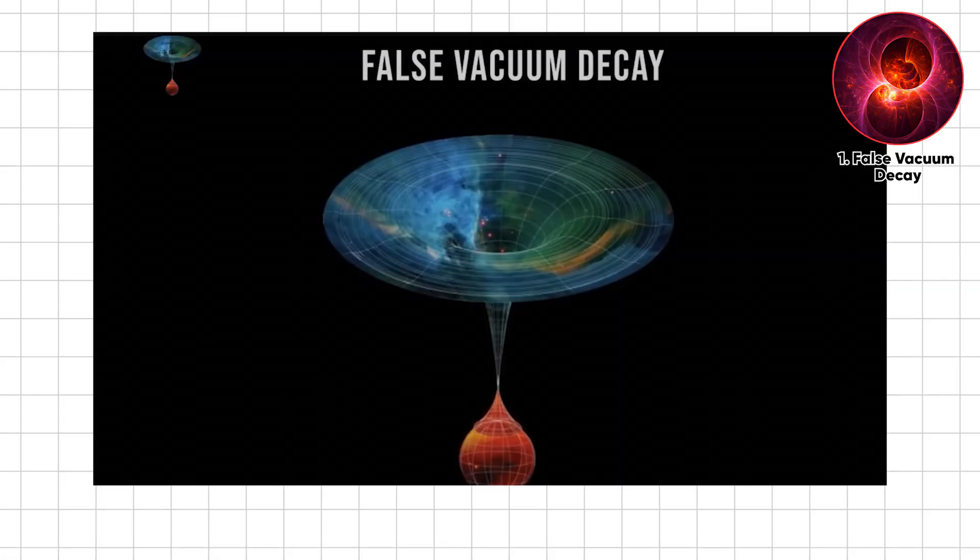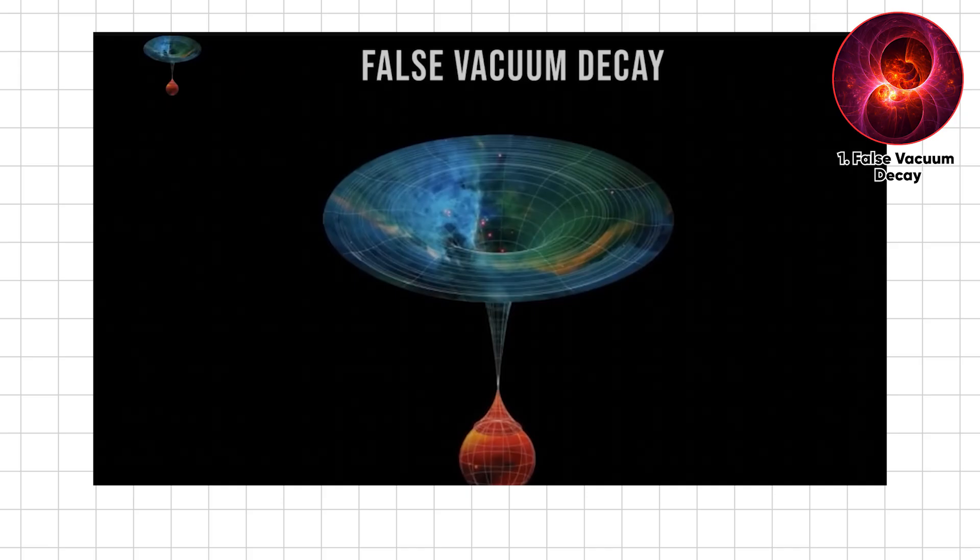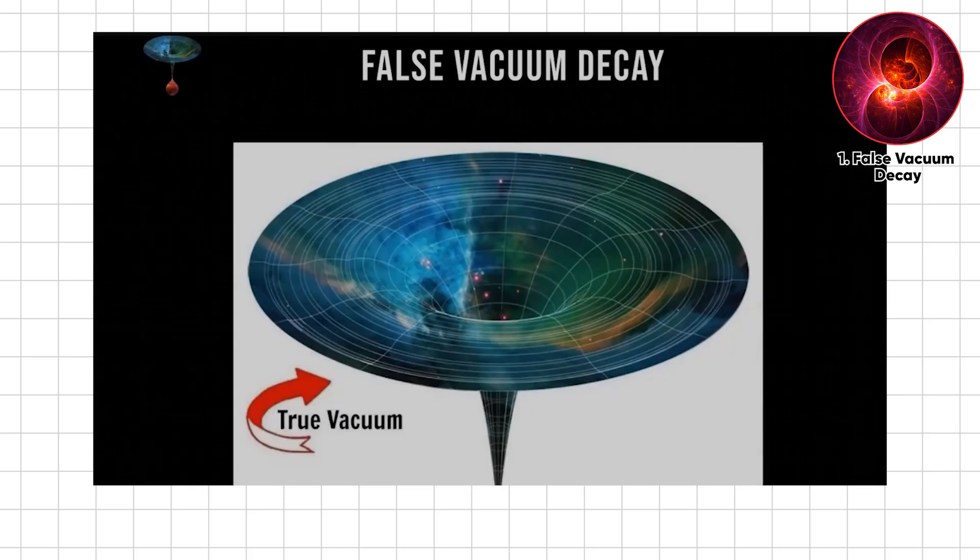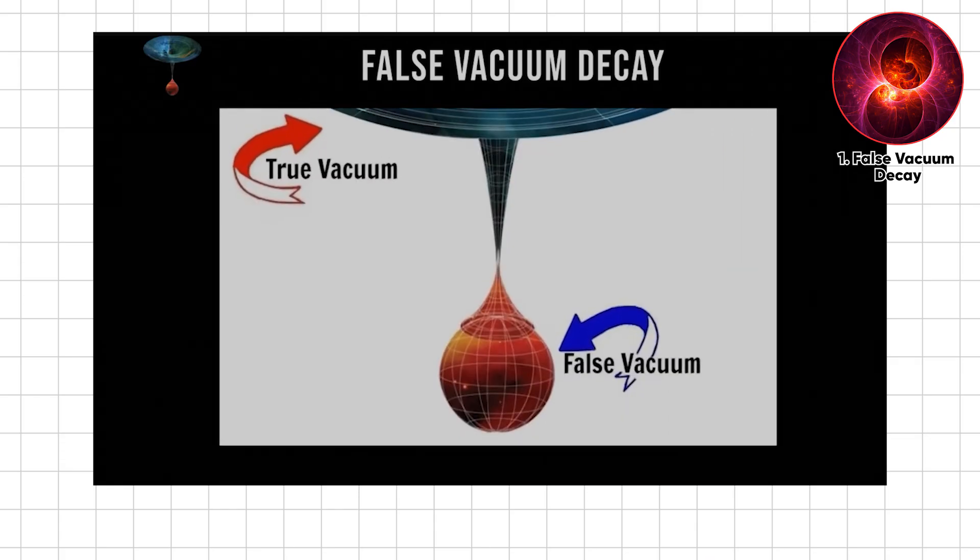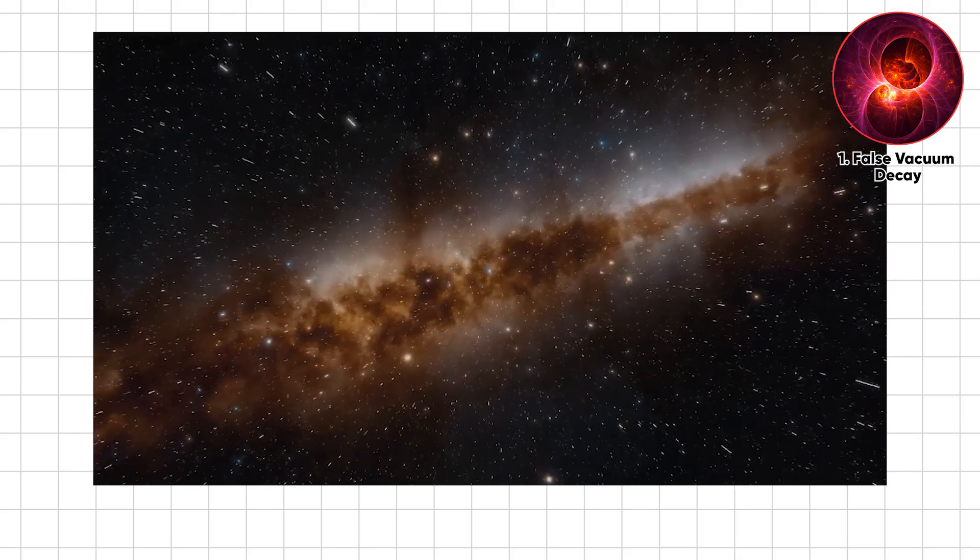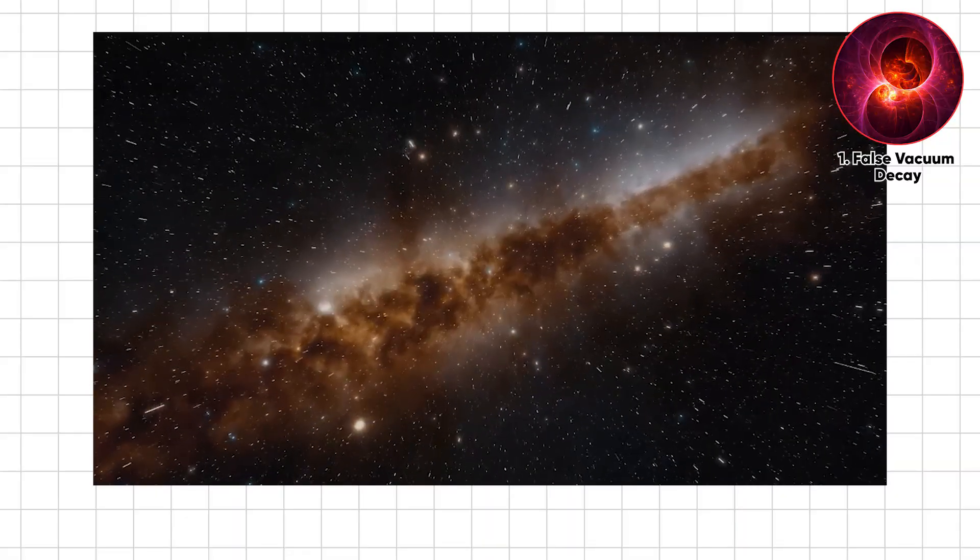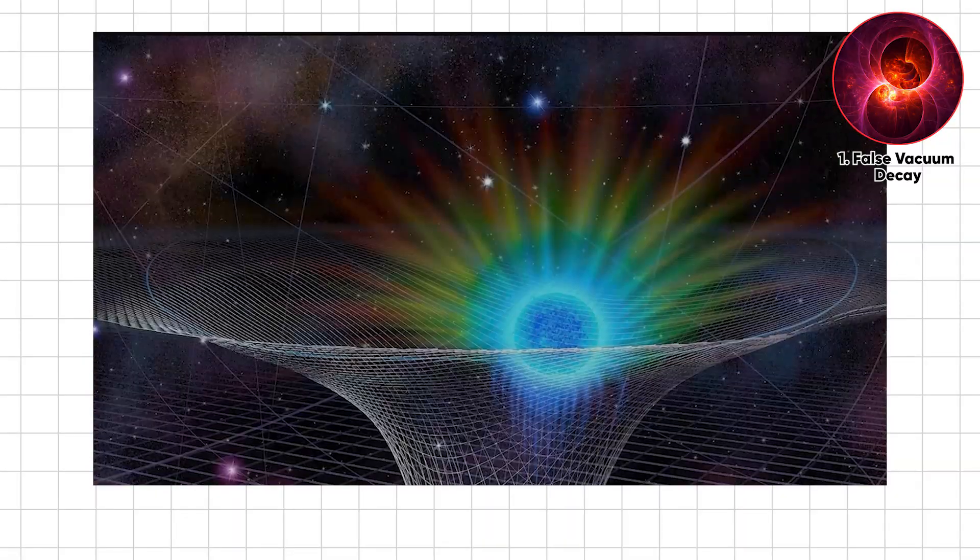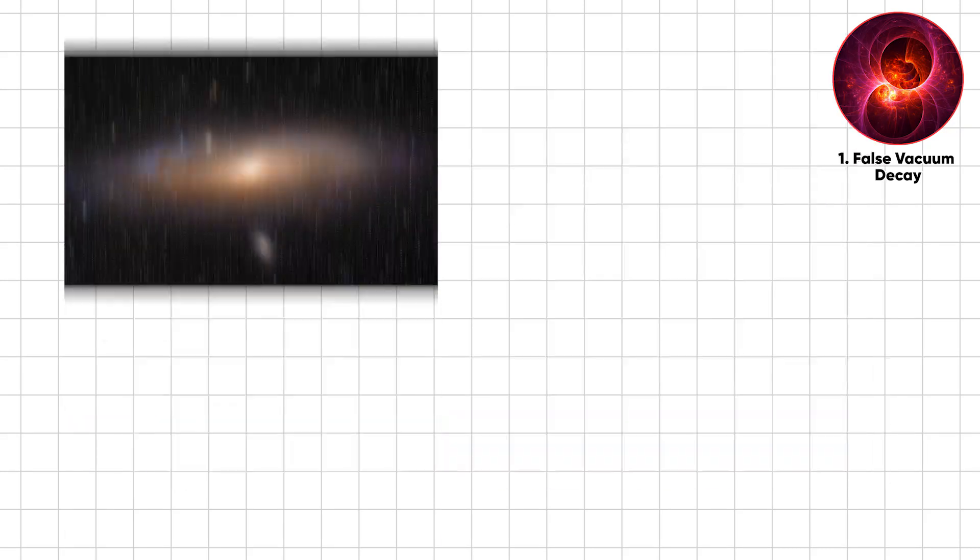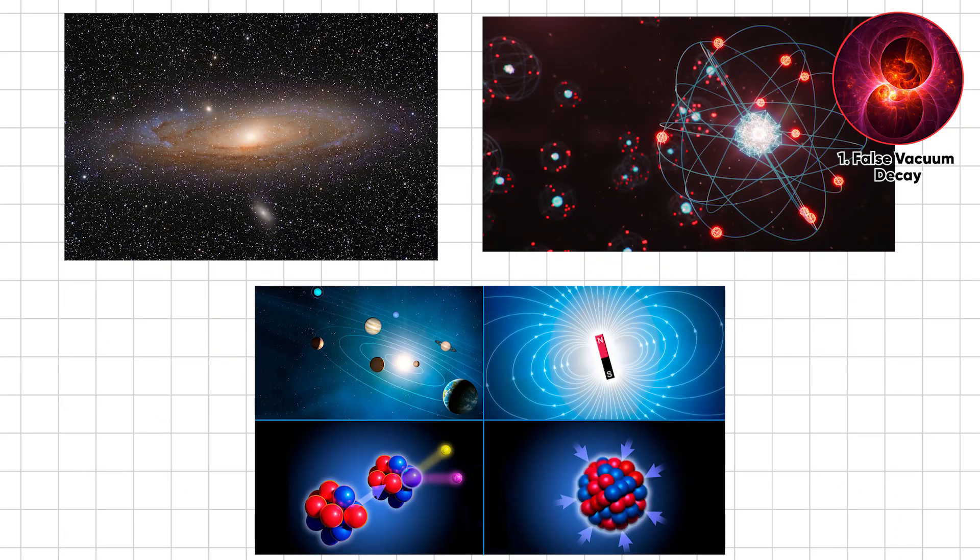The ultimate cosmic nightmare isn't a star or an explosion, it's a quantum event called false vacuum decay. Our universe may be sharing a stable facade, but beneath this calm lies an unstable quantum state. Somewhere a tiny bubble of true vacuum could suddenly pop into existence and begin expanding at the speed of light, rewriting the very fabric of physics as it consumes everything, galaxies, atoms, fundamental forces, without warning or mercy.